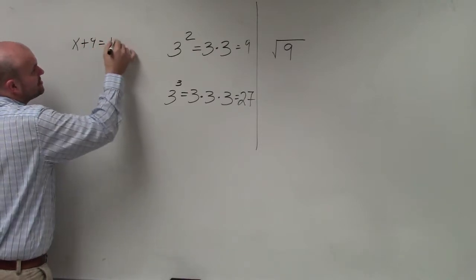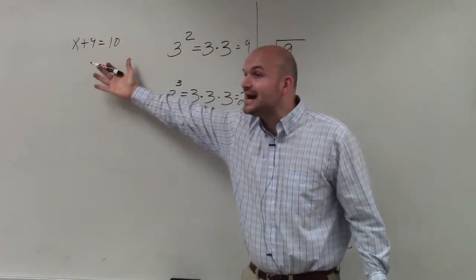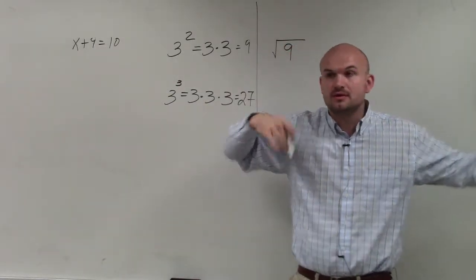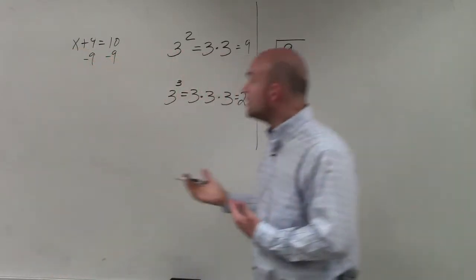x plus 9 equals 10. What we notice about our variable is our variable is being added by 9. So we had to do the inverse of that, which would have been subtracting. So when you're thinking about squaring and square roots,